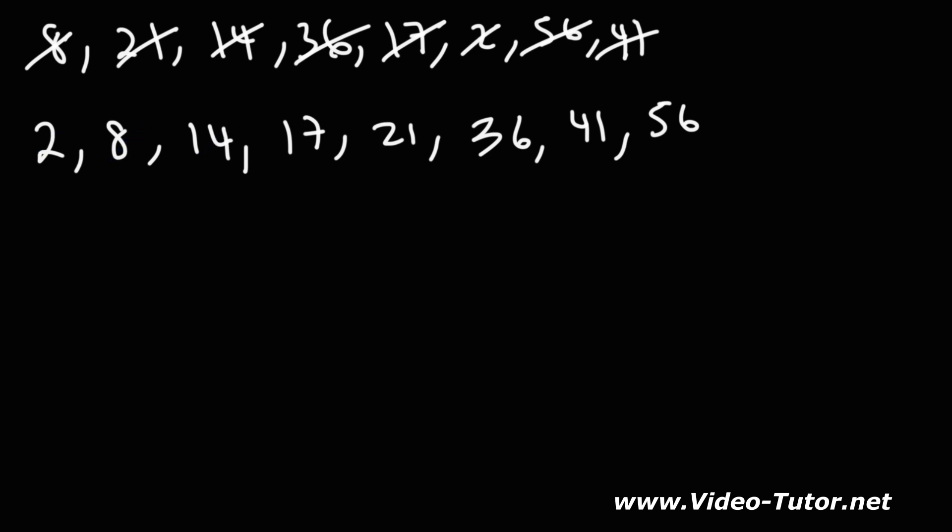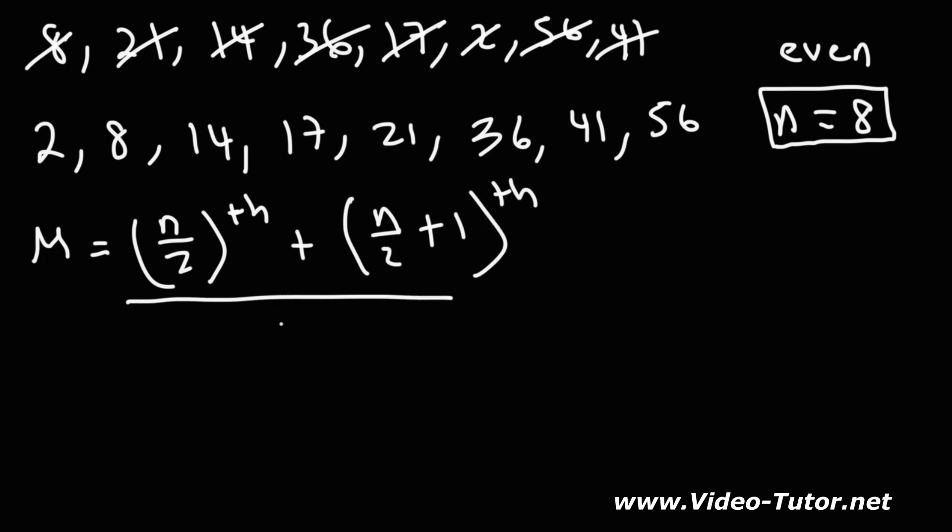To show that using a formula, here's what you can do. So whenever n is even, in this case n is 8, so we have an even set of numbers. The value of the median is going to be the value of the n over 2 plus the n over 2 plus 1 term divided by 2. So what this is really saying is the median is going to be the average of the value of the two middle terms.